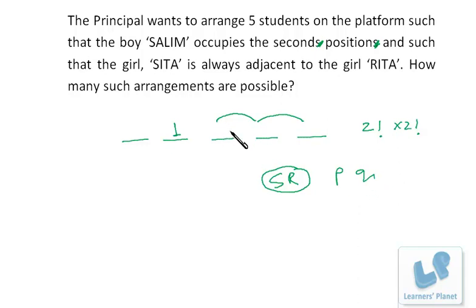Now the third seat, P and Q should sit. Now S and R have been arranged 2 factorial into 2 factorial ways. We are left with two positions, and on these two positions P and Q can be arranged in 2 factorial ways.